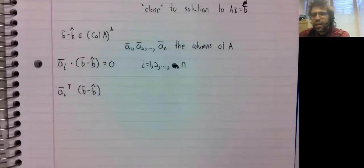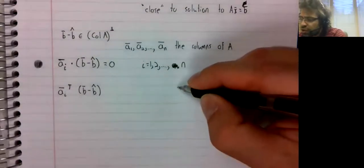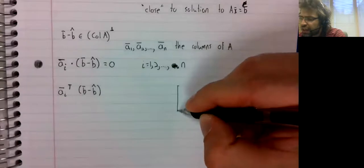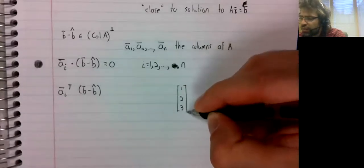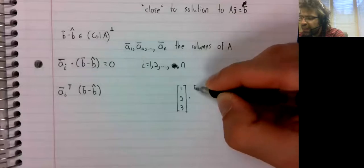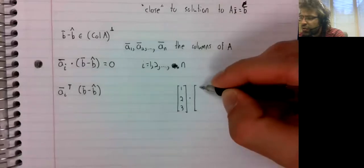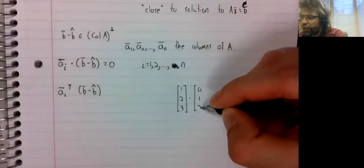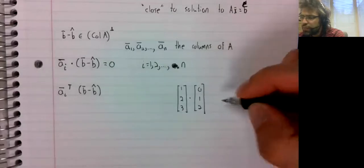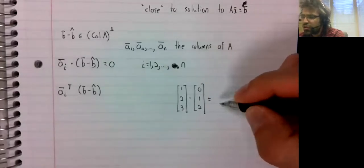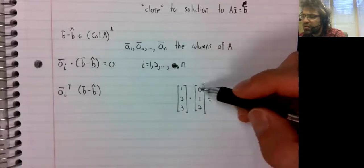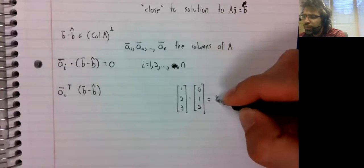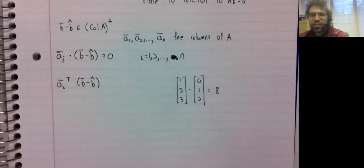I say essentially, I mean suppose we have the vector one, two, three, and the vector zero, one, two. We take the dot product, two, six, zero, it's eight.